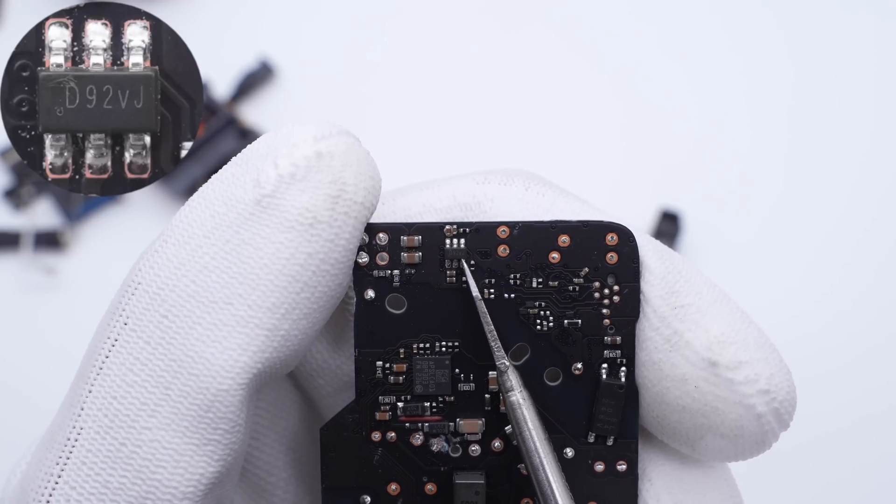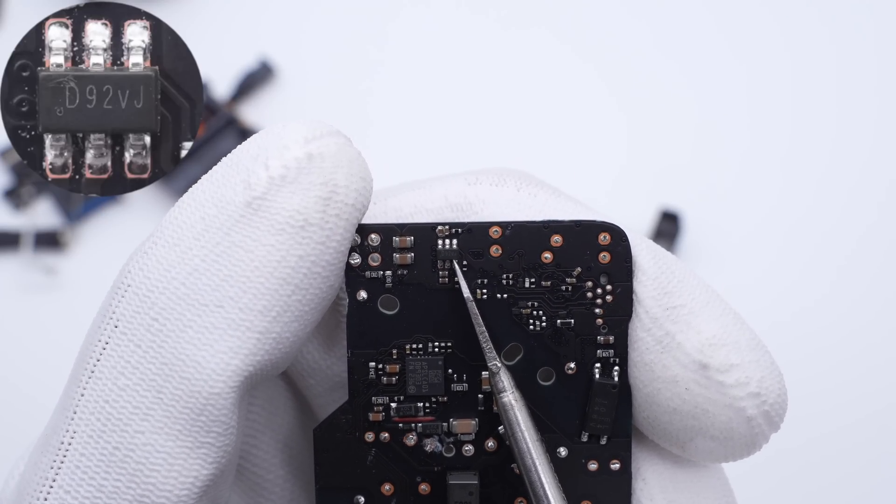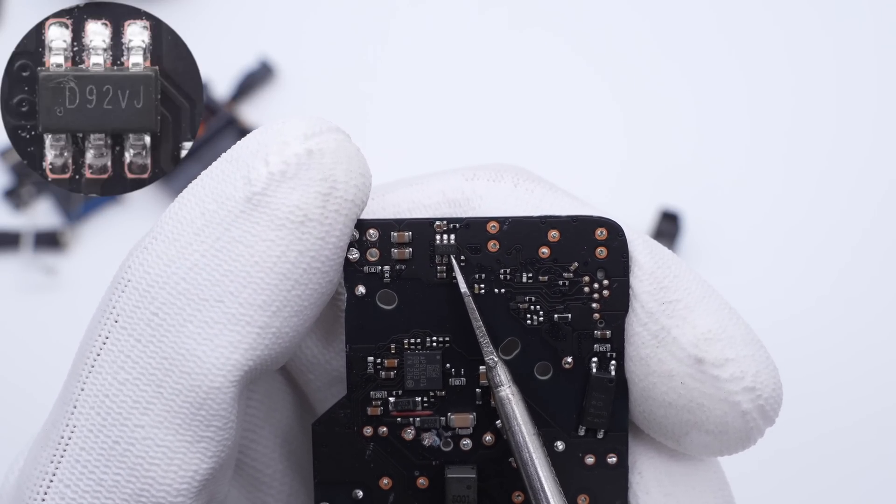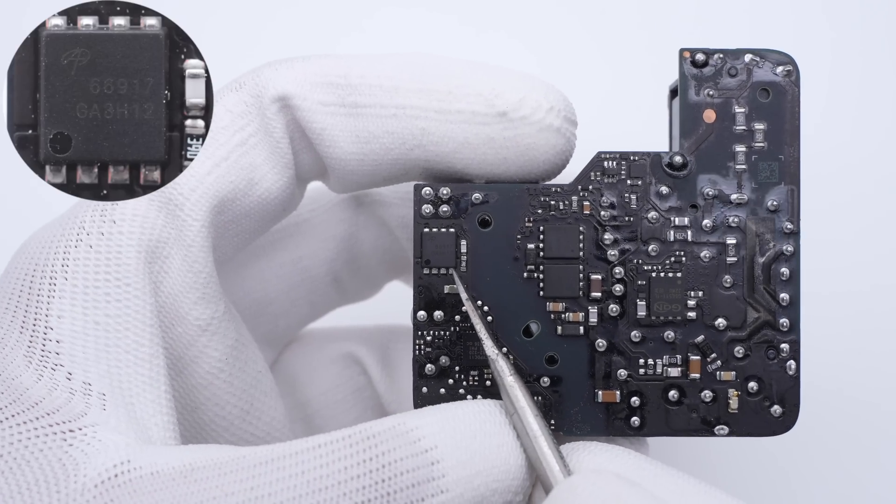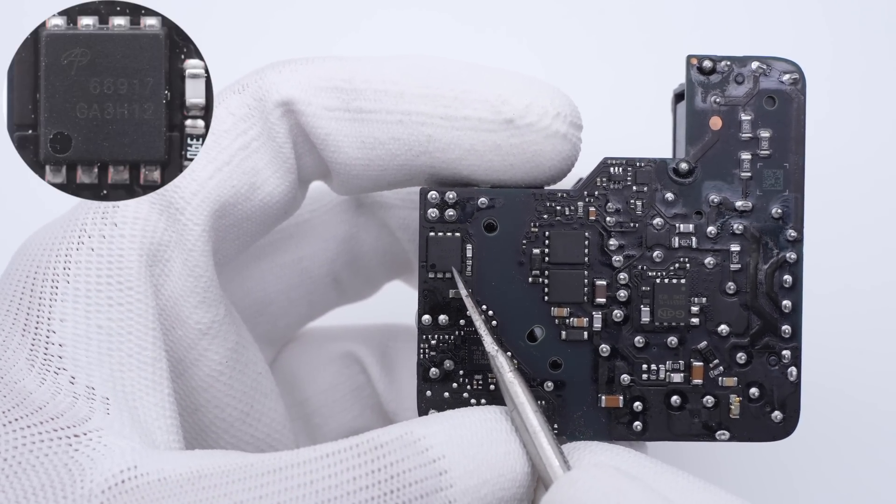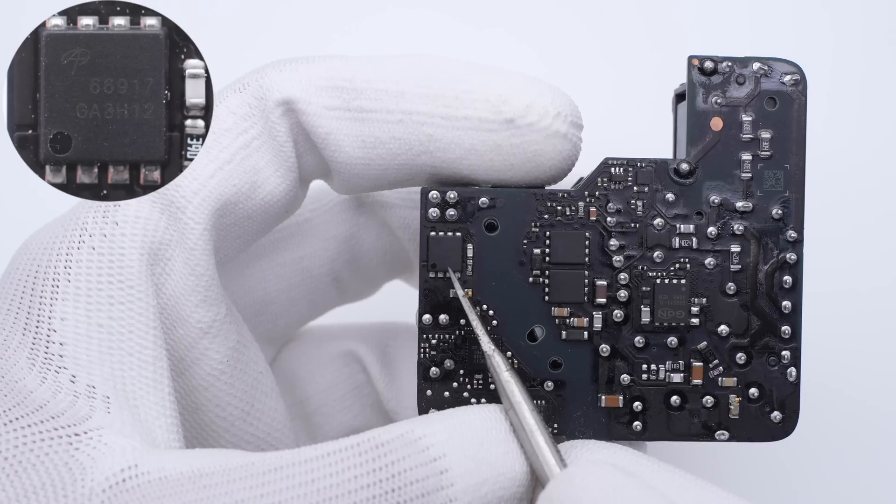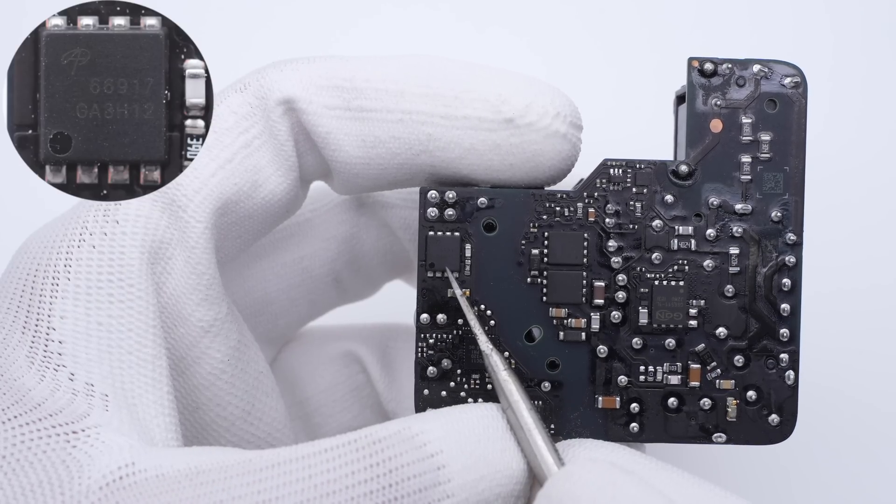Then let's move to the synchronous rectification circuit. Its controller is marked with D92VJ. And the synchronous rectifier is from AOS. It adopts DFN 5x6 package, 100V, 2.9mΩ.